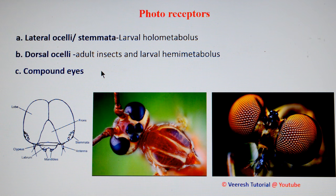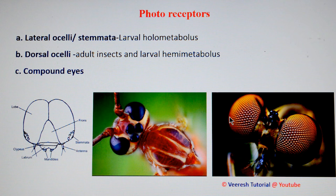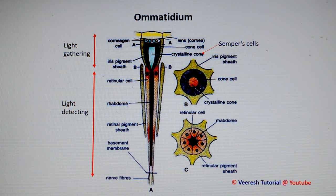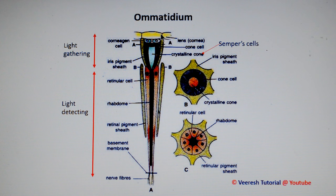Compound eyes are made up of a number of individual units called ommatidia. These ommatidia are present in adult pterygote insects as well as immature hemimetabolous insects. Each ommatidium is differentiated into a light-gathering and a light-detecting part. The corneal lens is a transparent cuticle secreted by corneagen cells.